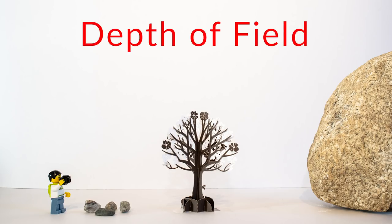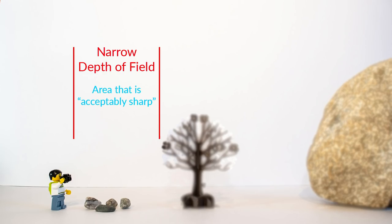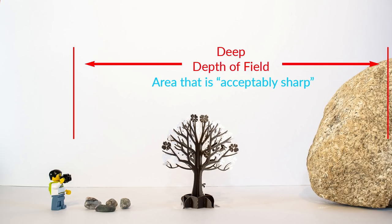The first is depth of field. Depth of field is the area or zone in a scene that is in focus. A narrow depth of field will only have a small area of the scene in focus, whereas a wider or deeper depth of field will have more elements of a scene in focus. In landscape photography, we are typically trying to get as much of the scene as possible in focus or acceptably sharp, which basically means the sharpest focus we can achieve given the limitations of the equipment and any challenges in the scene itself.